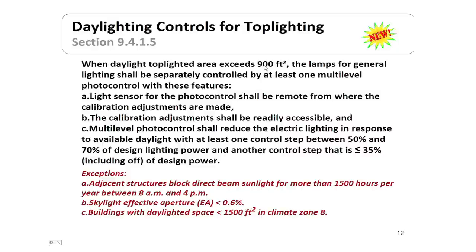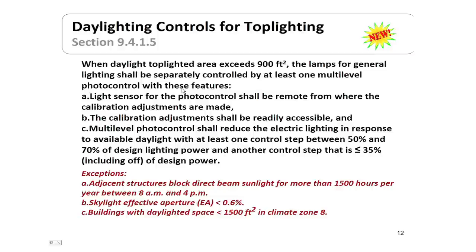Next are daylighting controls for top lighting, also known as skylights. When the top-lighted area — the area that the skylights illuminate, not the skylight area itself — exceeds 900 square feet, the lamps for general lighting shall be separately controlled by at least one multi-level photo control. The light sensor shall be remote from the calibration adjustments, calibration shall be readily accessible, and the multi-level photo control shall reduce electric lighting in steps of 50% and 70% of total design power, with one more control step at less than 35%, including the off position.